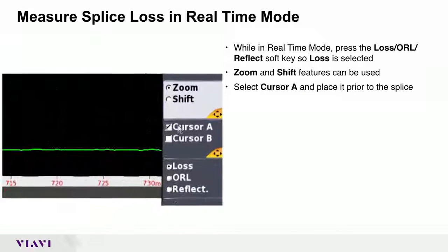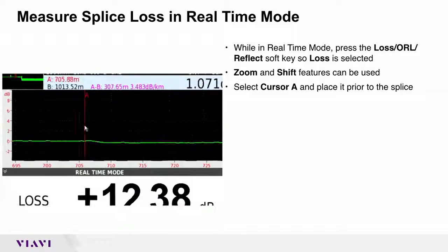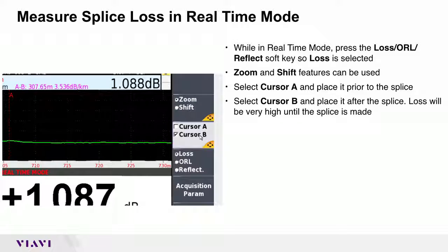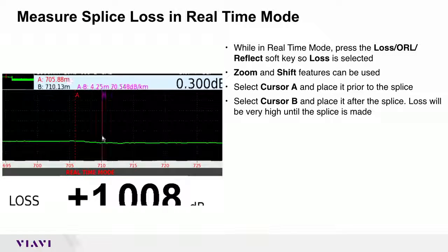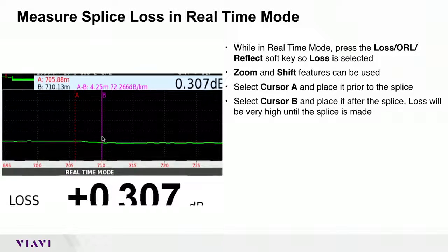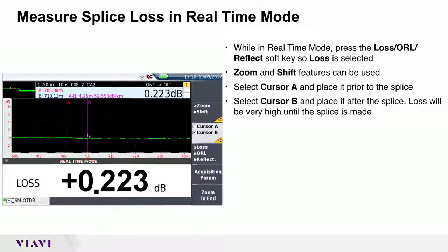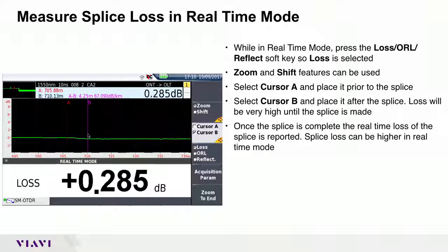Select cursor A and place it prior to the splice. Select cursor B and place it after the splice. Loss will be very high until the splice is made. Once the splice is complete, the real-time loss of the splice is reported.